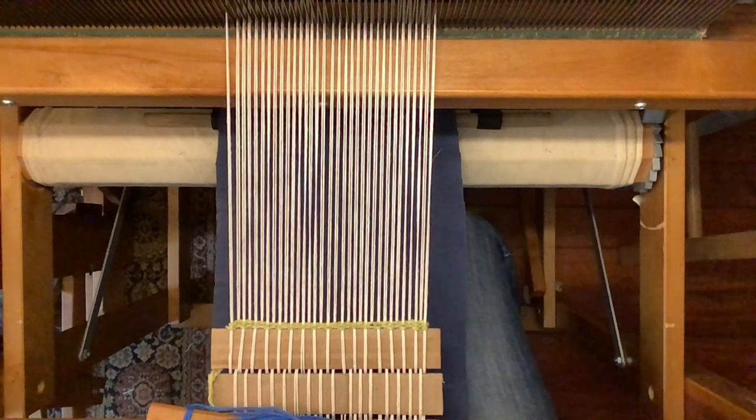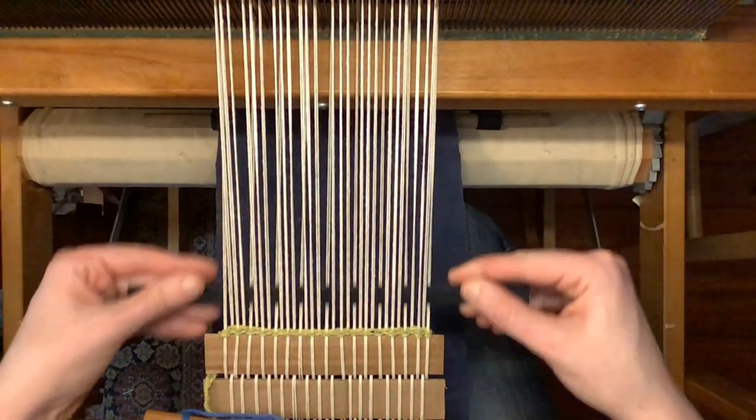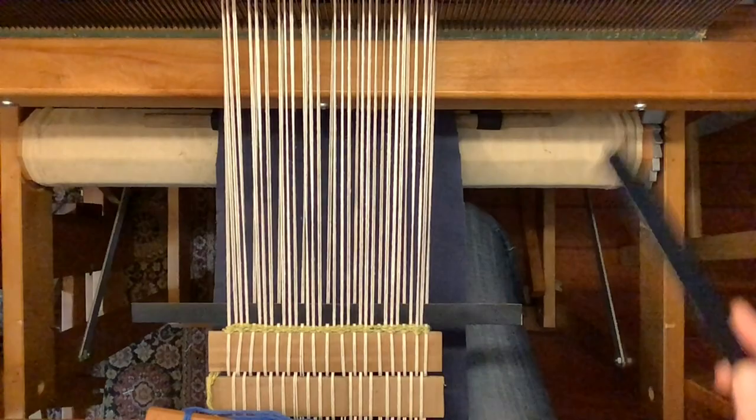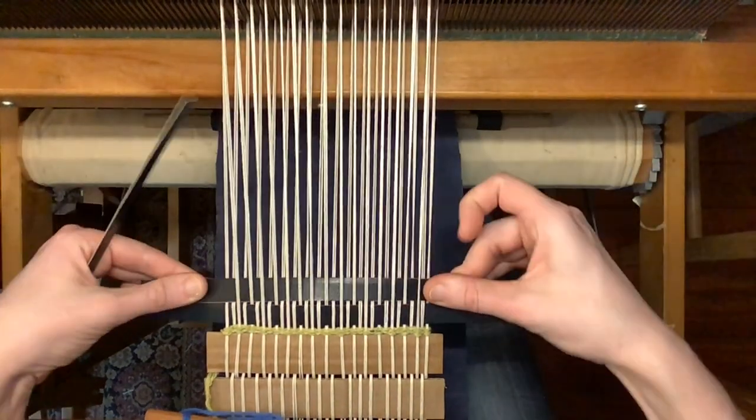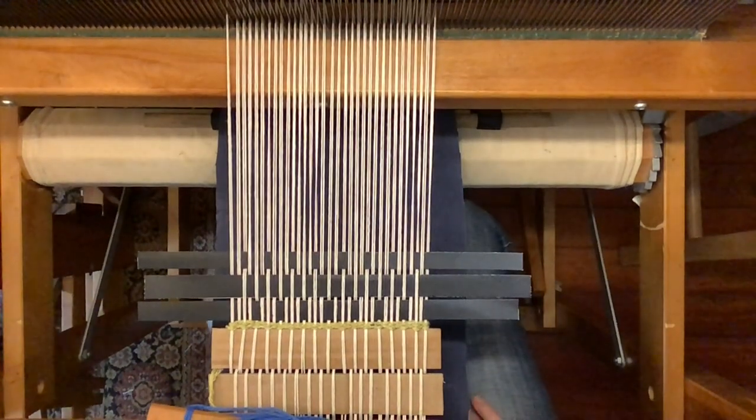So just like last time, to get our cro-kbroad pattern we'll be cycling through three different sheds or openings between the warp threads. So the whole time we'll just be cycling through one, two, three, and we'll repeat that over and over again till we've croak broad.